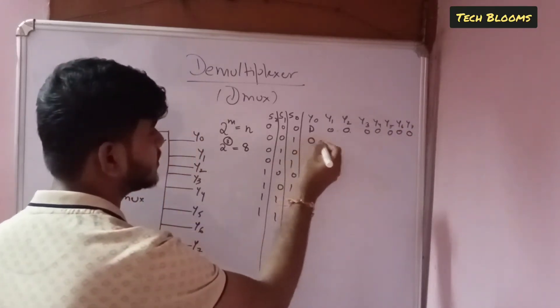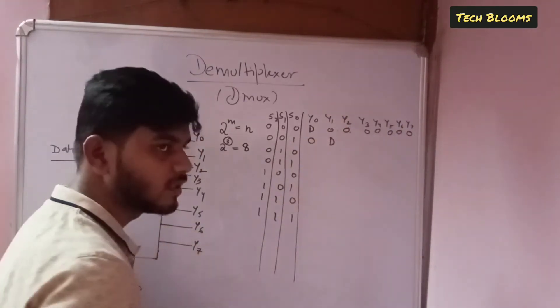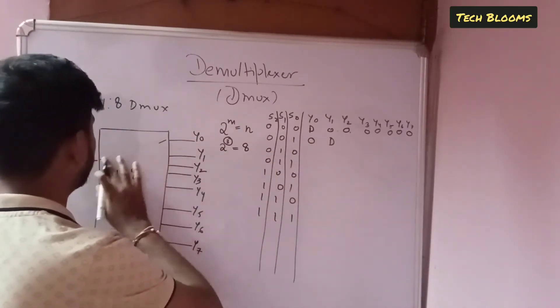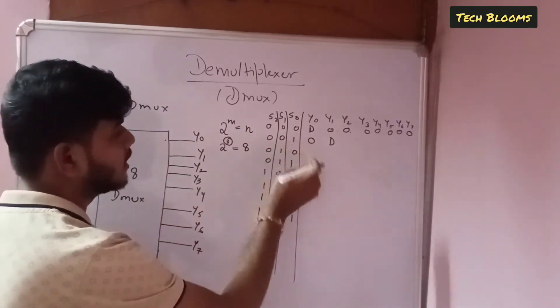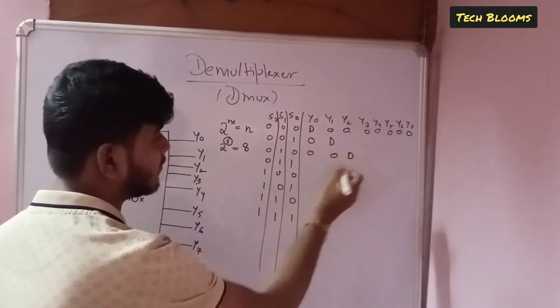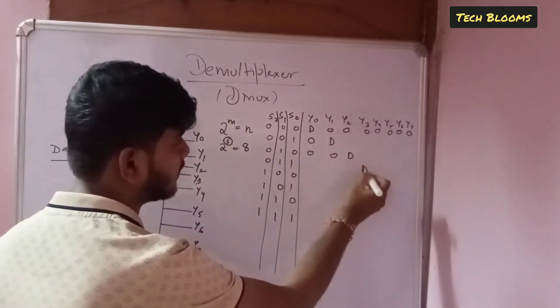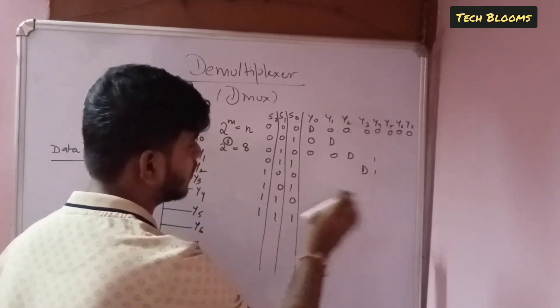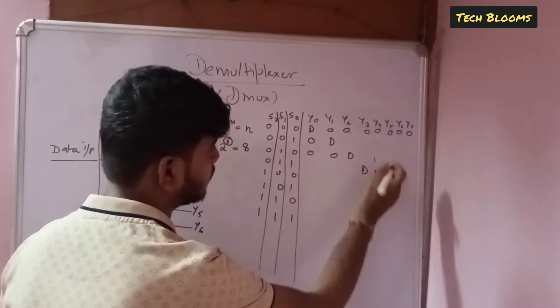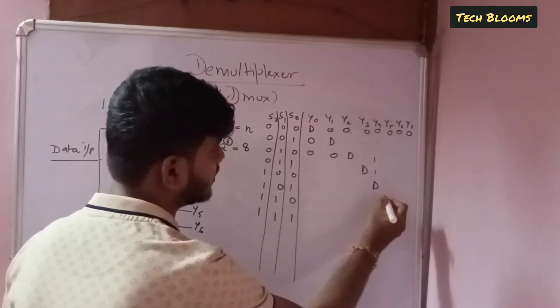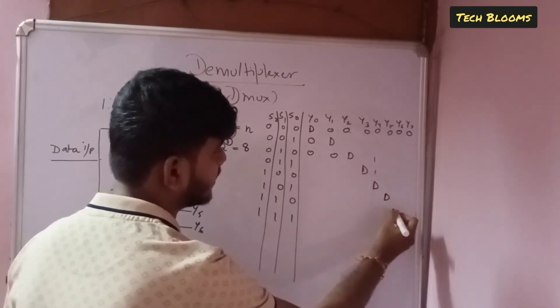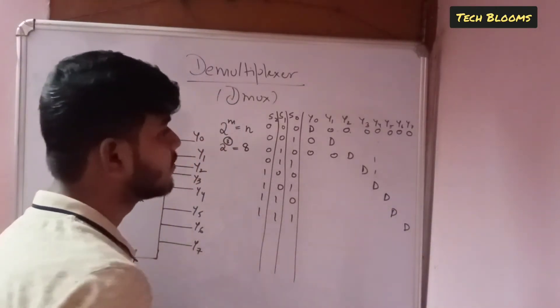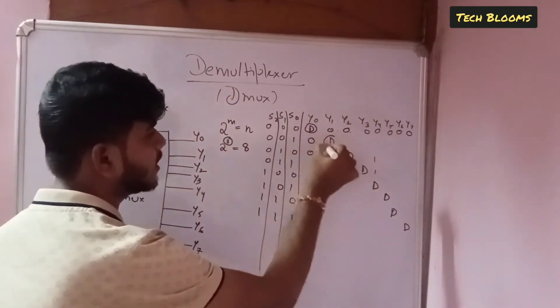So in similar sense we will have y1 to be, we will be having the data pin in the second select line that is 0 0 1 and in the third select line your y2 will be having and in the fourth select line your y3 will be having and so on. y4 will be having and in this case y5 and y6 and y7. So that is how we have the data points to each of them. The remaining are 0s.